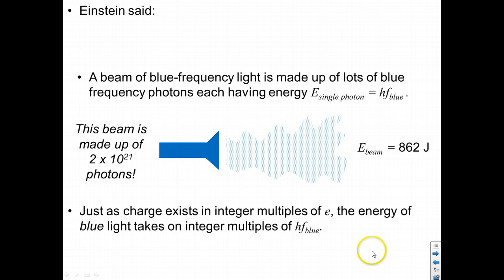And the energy of green light takes on integer multiples of h times the frequency of green light. So all light of a given frequency, all light is quantized in this way.